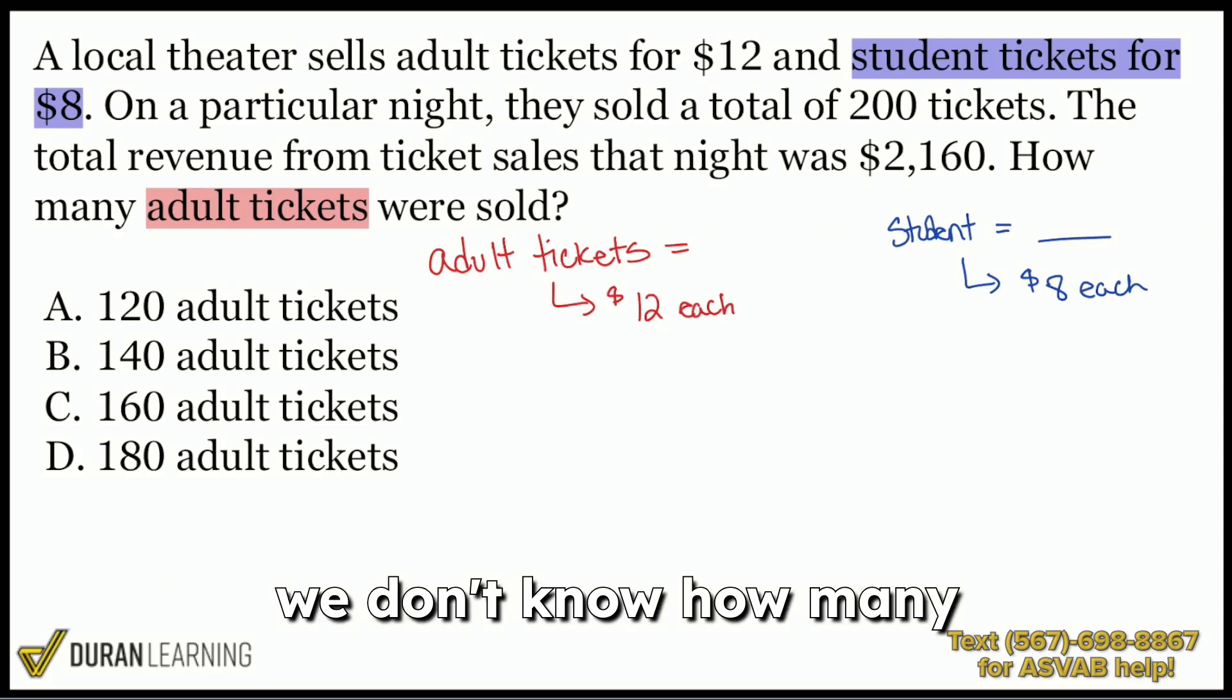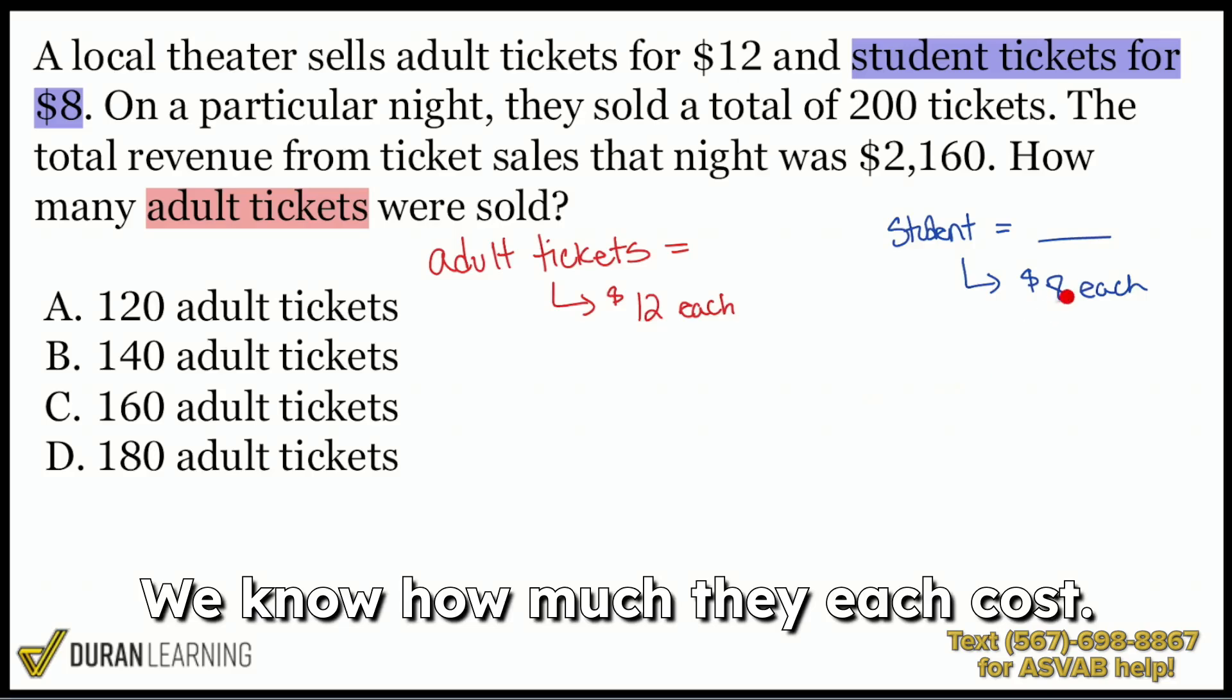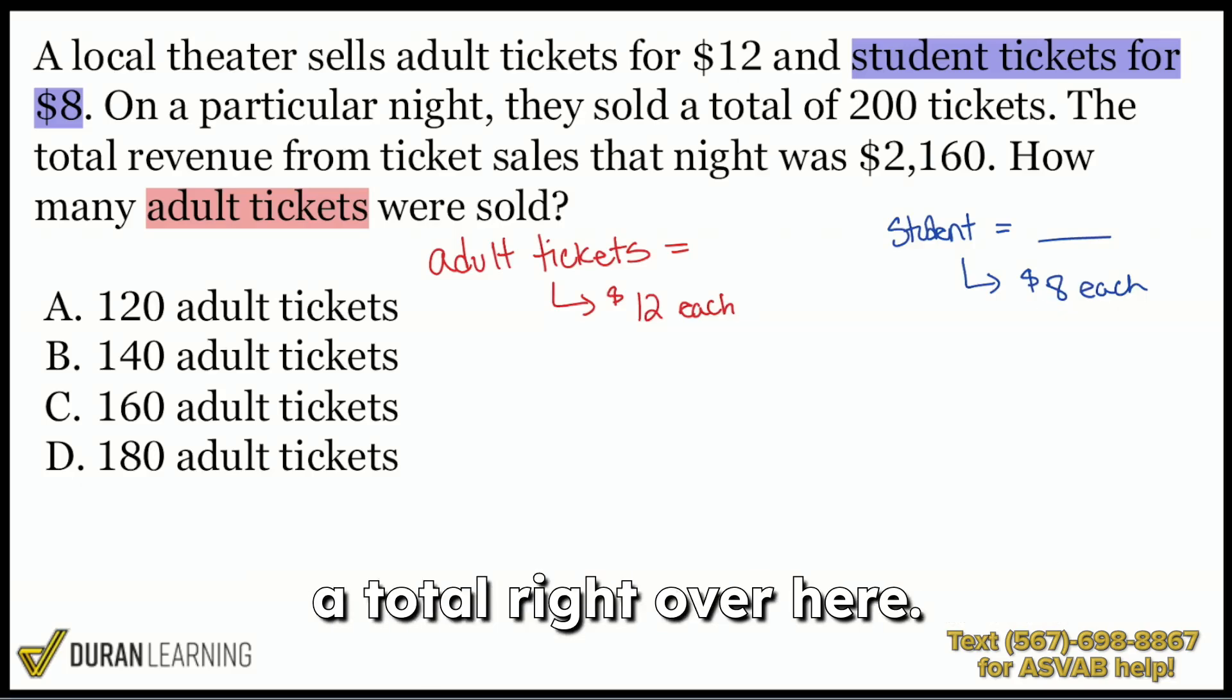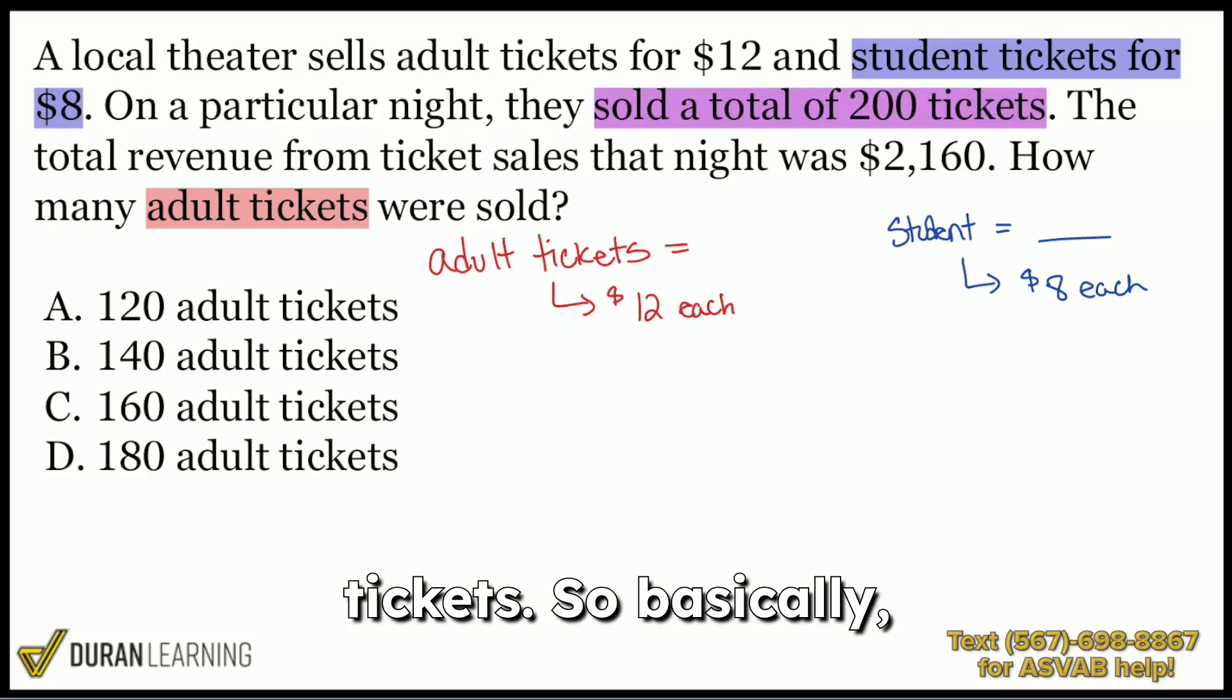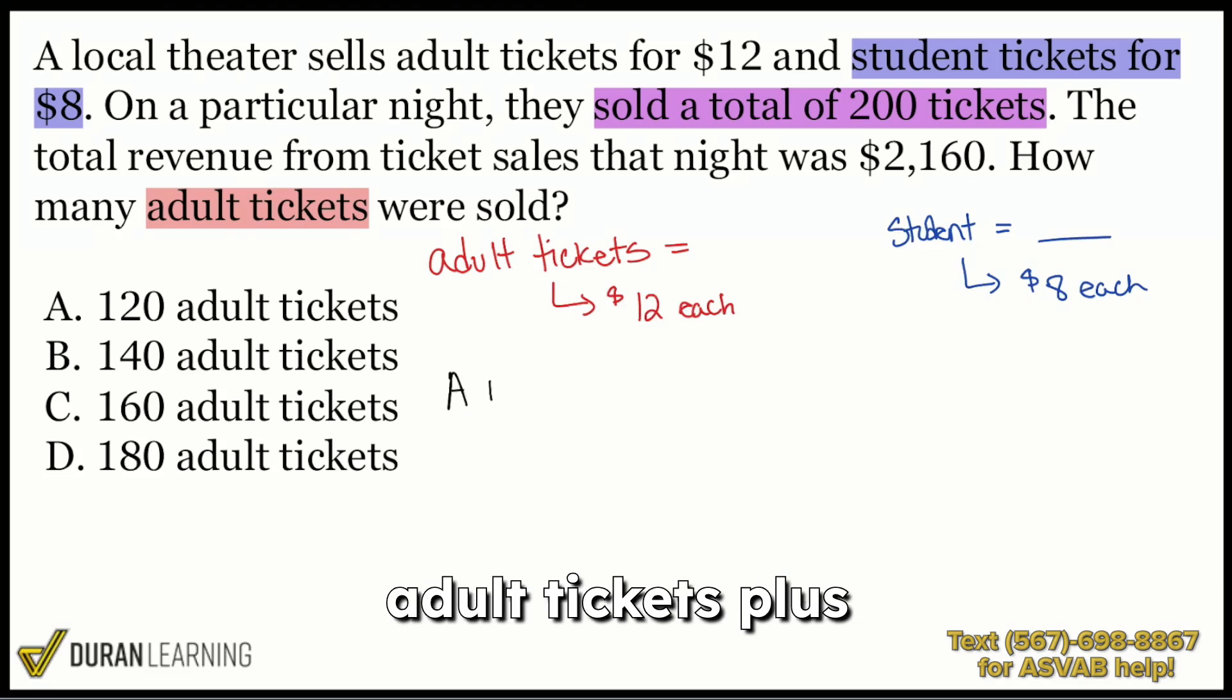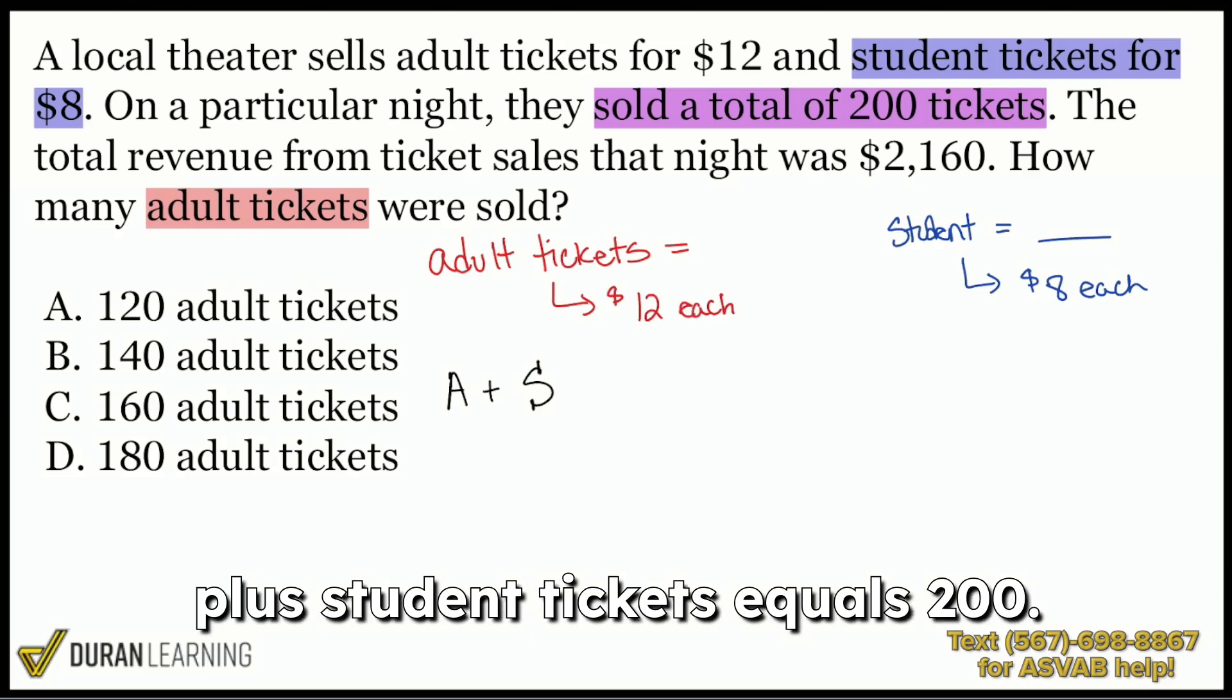But follow along, and I'll show you if what you had so far was right. So again, we don't know how many adult tickets. We don't know how many student tickets. We know how much they each cost. And we know that there was a total. They sold a total of 200 tickets. So basically, adult tickets plus student tickets equals 200.